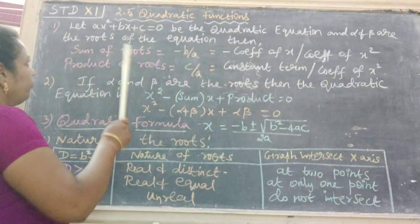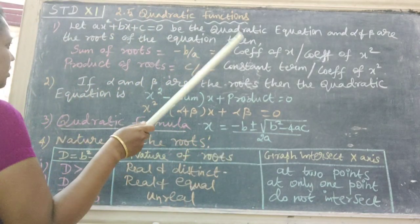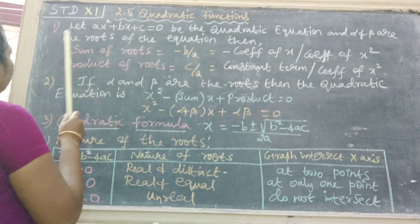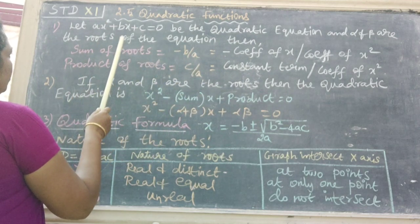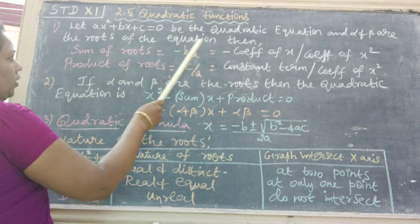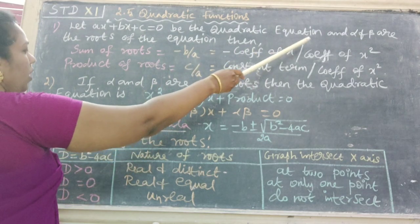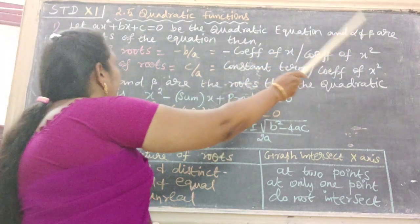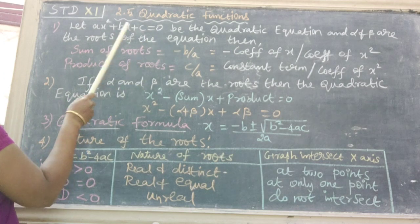The next topic is 2.5 Quadratic Functions. It is a very easy topic. First, let ax² + bx + c = 0 be the quadratic equation and alpha and beta are the roots of the equation.